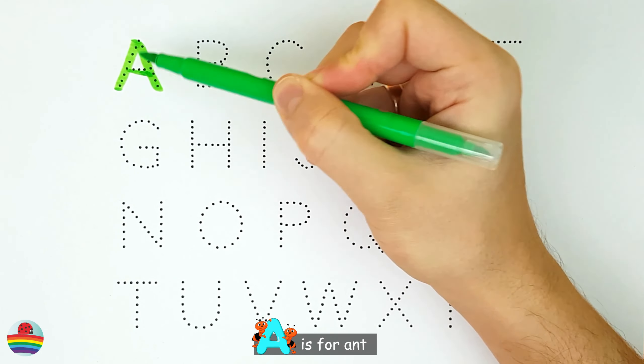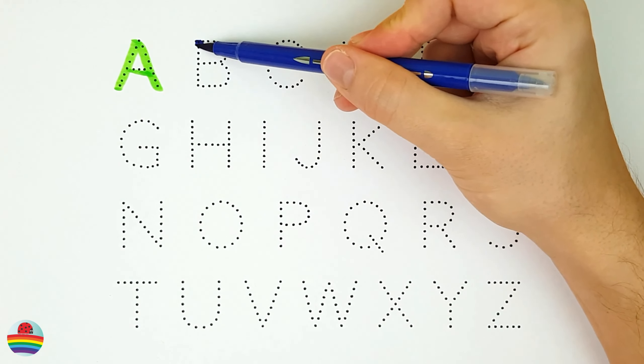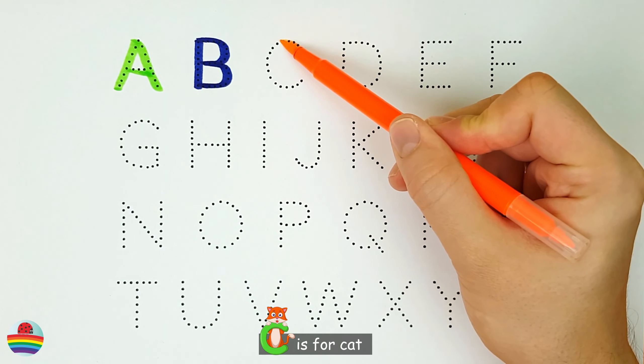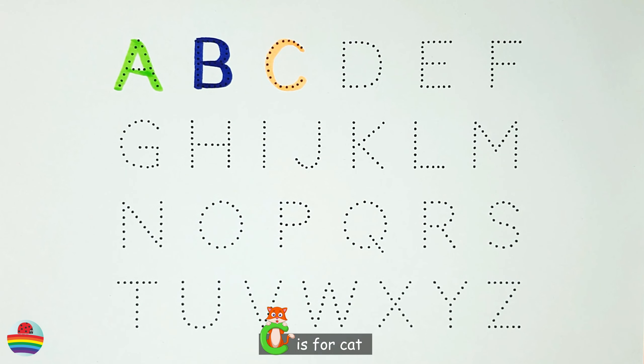A. A is for Ant. B. B is for Bear. C. C is for Cat.